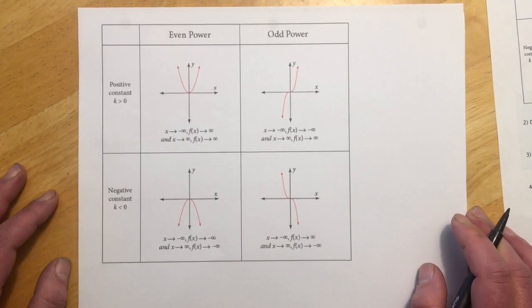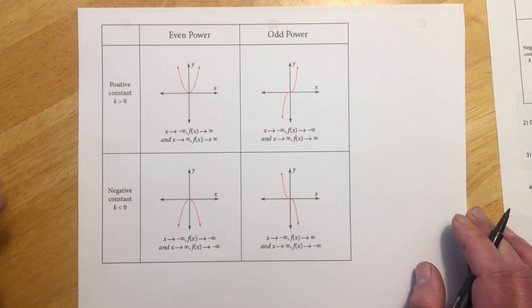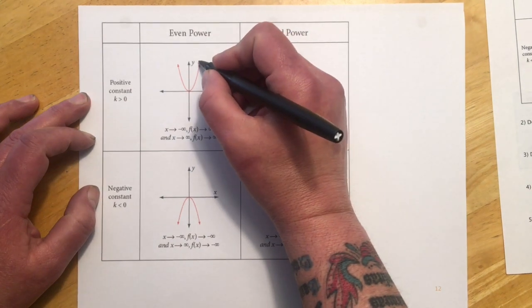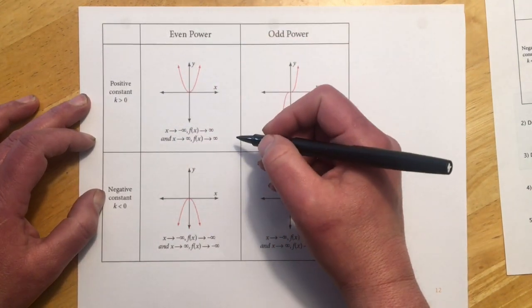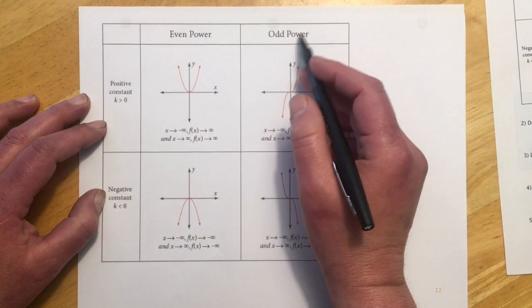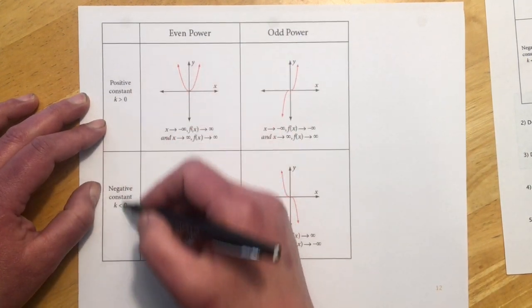Okay, so this chart ends up being really important. This tells us kind of what any polynomial will do in its end behavior, or long-term behavior, and by that I mean what it does as it goes out to infinity. So we have kind of two things at play. We have the power, which was the degree, and then the constant.